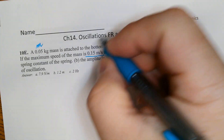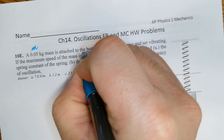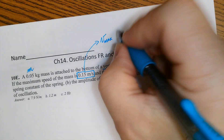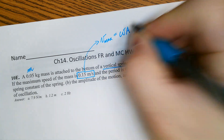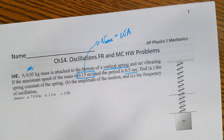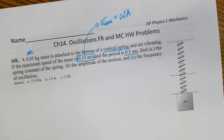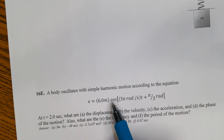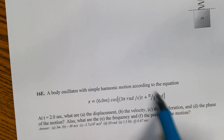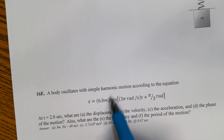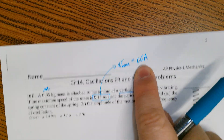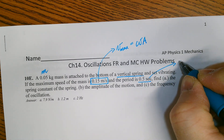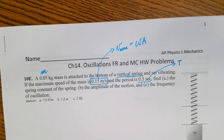V max is omega times A. That comes from the position function — if we take the derivative using the chain rule, the derivative of the inside multiplies to the front, and that becomes the V max, which is omega A. The period happens to be 0.5 seconds — that's the period T.